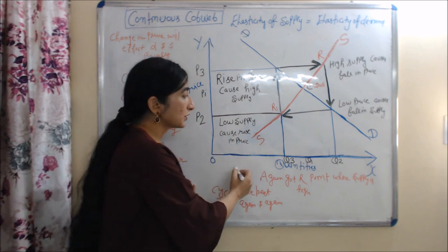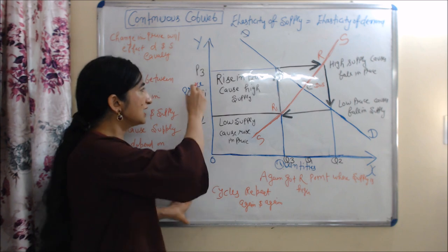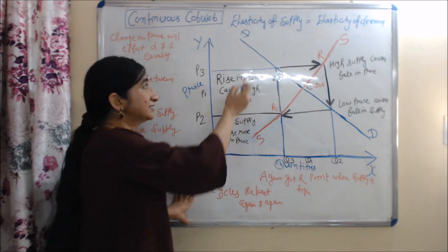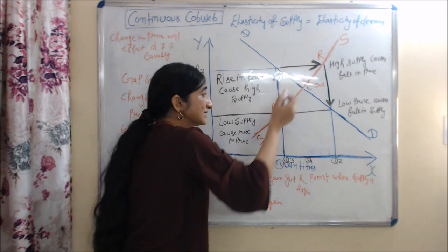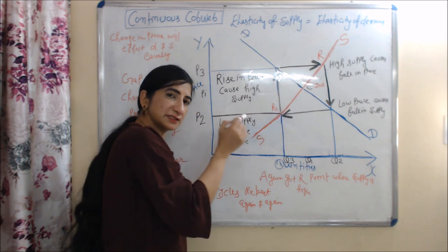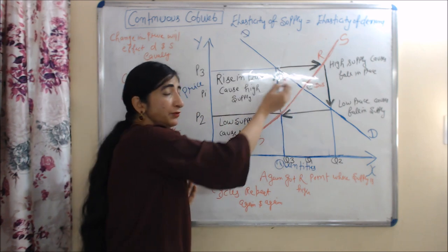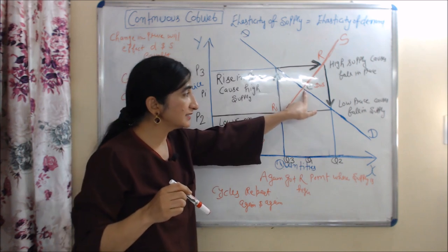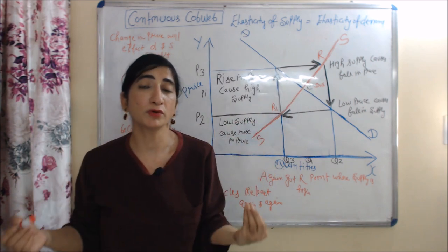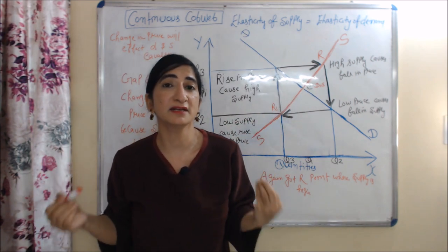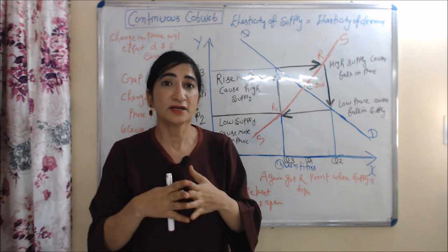We understand continuous cobweb with the help of a diagram. On the x-axis we have quantities and on the y-axis we have price. DD is our demand curve, SS is our supply curve, and we have the equilibrium point at E where demand is equal to supply. Now suppose for any reason our supply has increased, and this high supply will cause a fall in price.